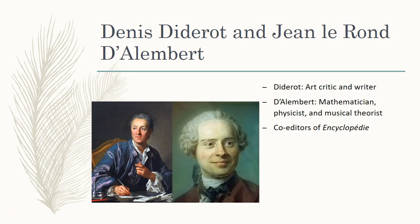This work is closely associated with Denis Diderot and Jean le Rond d'Alembert. Denis Diderot was an art critic and a writer as well as a philosopher. D'Alembert was a mathematician, a physicist, a musical theorist, on top of being a philosopher as well. These two were the co-editors of L'Encyclopédie — The Encyclopedia. Diderot would edit the literary topics, and D'Alembert handled the scientific topics, which is not surprising — one's a writer and art critic, the other is a physicist and mathematician.